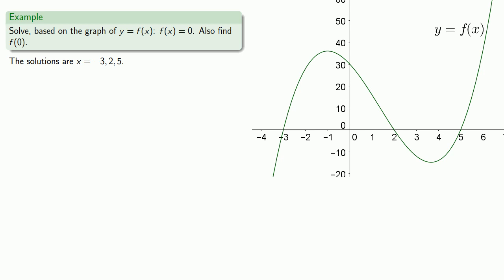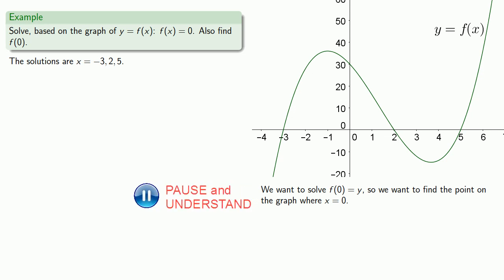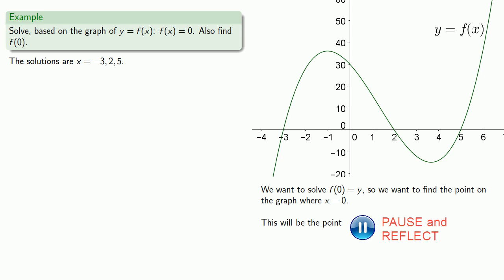Now we'd like to find f(0). Well, we know that f(x) equals y, so let's try to solve f(0) = y. So we want to find the point on the graph where our x value is 0. And this point will be the point on the y-axis, (0, 30). So again, equals means replaceable. We want to find f(0), f(0) is y, and our y-coordinate is 30. So f(0) is 30.